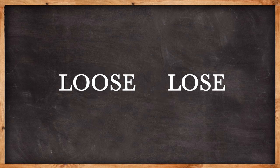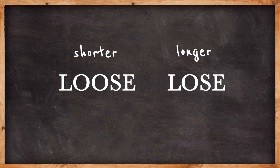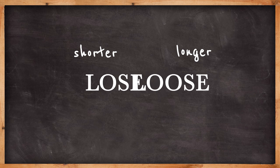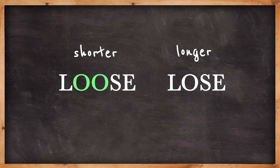So we now know why loose is shorter than lose. It's the fortis consonant sound at the end. But there's another problem here, the spelling. Shouldn't they be the other way round? Loose has one more O than lose, but it's shorter.